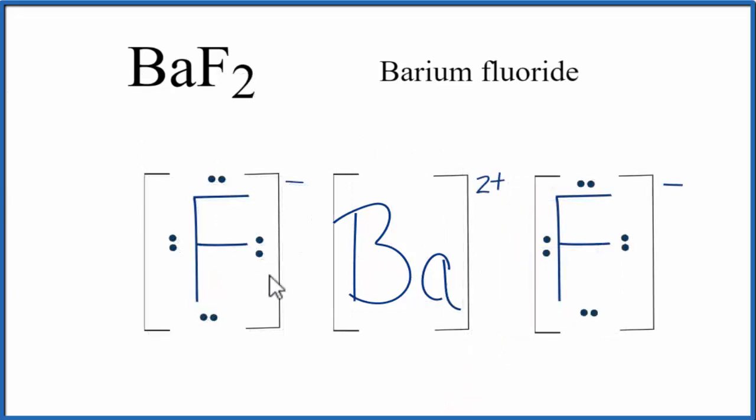The reason we draw these brackets here is to show that those 2 electrons that the barium transferred to the fluorines were transferred, they were lost by the barium and gained by the fluorine. So we're not showing electrons being shared here like we would in a covalent bond.